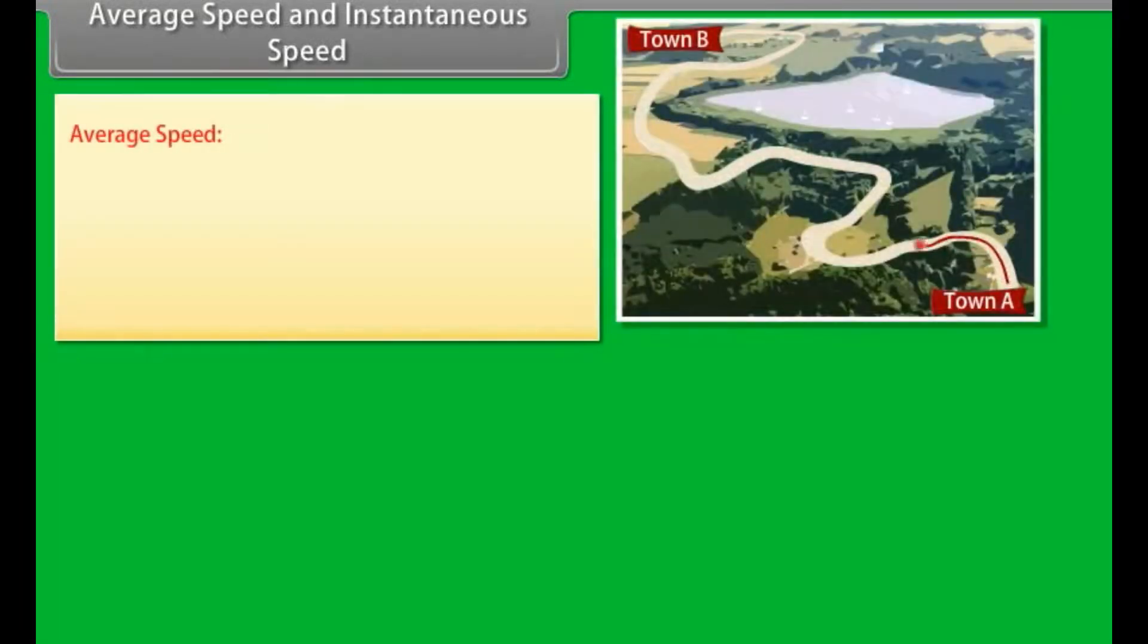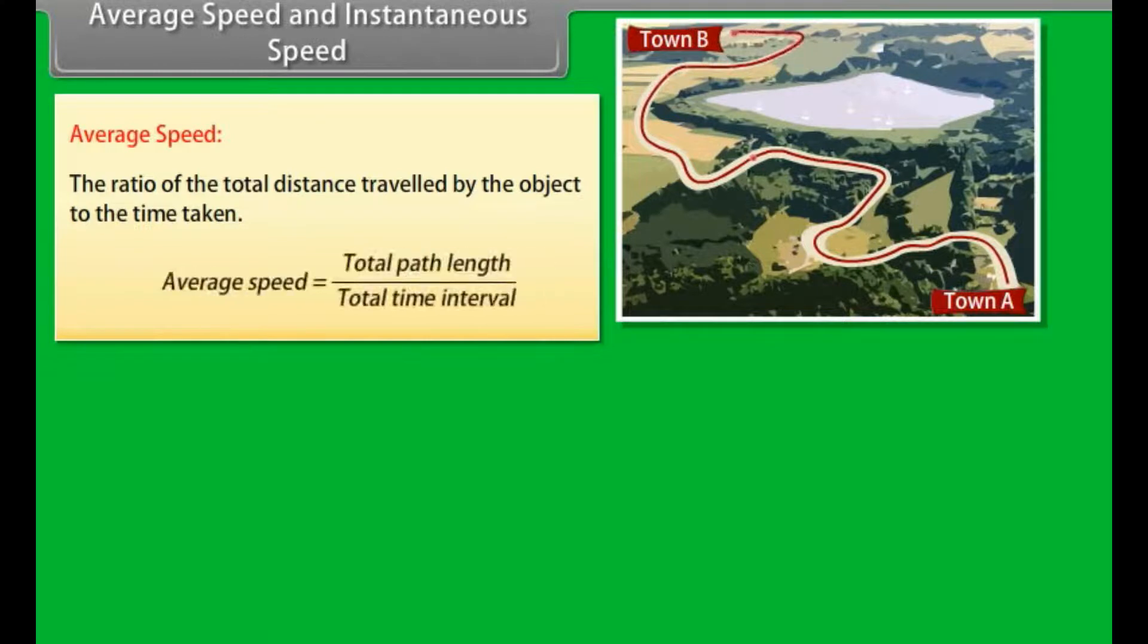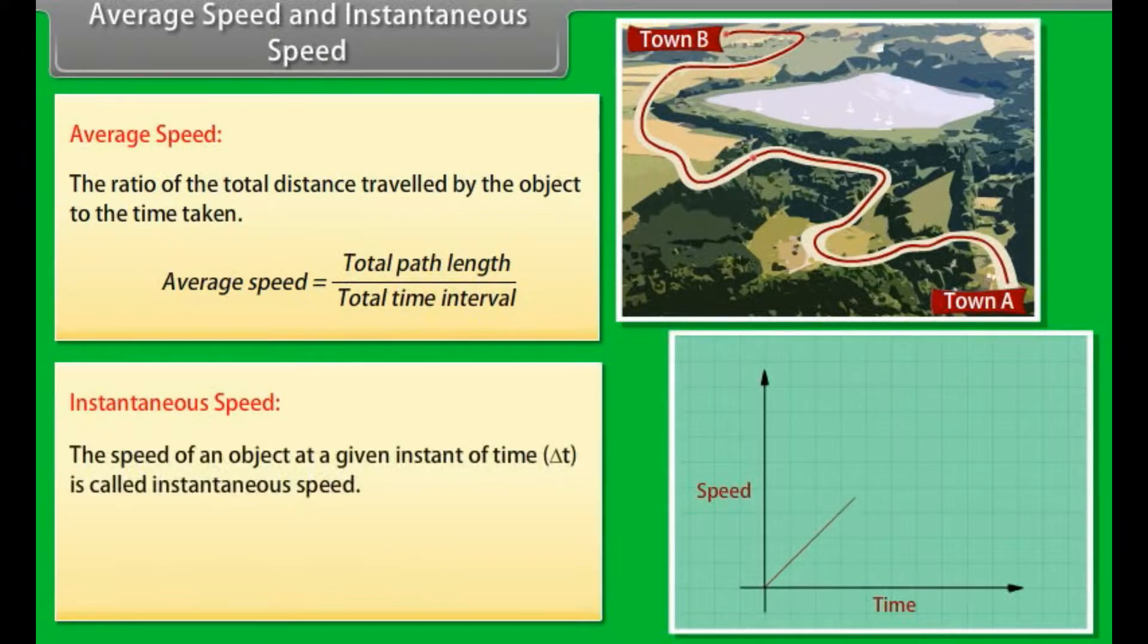Average speed and instantaneous speed. Average speed: The ratio of total distance traveled by the object to the time taken. Therefore, average speed is equal to total path length upon total time interval. Instantaneous speed: The speed of an object at a given instant of time is called instantaneous speed.